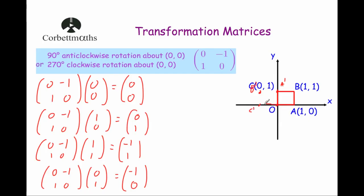So when we join up that square, we get it looks something like this. And it has been rotated 90 degrees anti-clockwise about the origin, or 270 degrees clockwise about the origin. And that's it. Thank you.